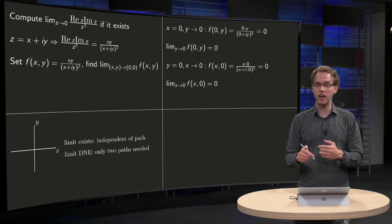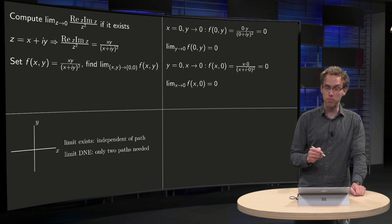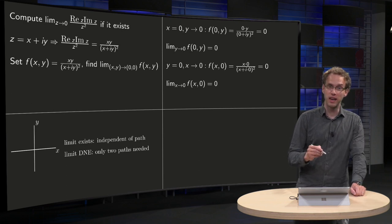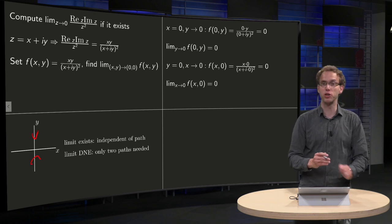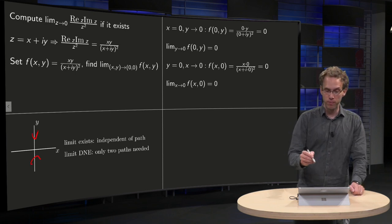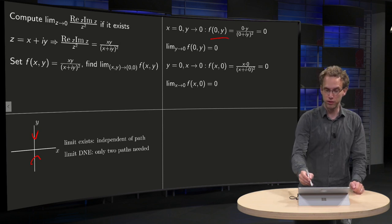So let's try. You usually try the easiest path first if you do a limit like this. So for example what happens if we take x equals 0 and we go with y to 0, so we approach the origin like this. Well, then we substitute x equals 0 in our function, we get the function over here.